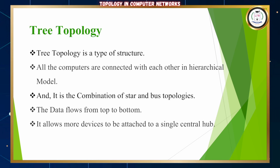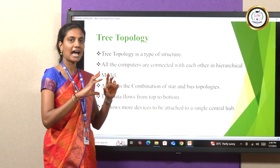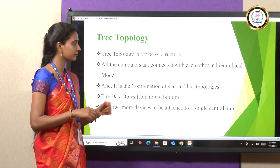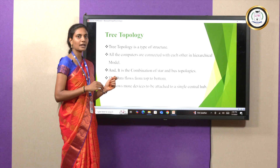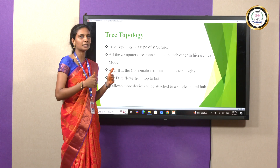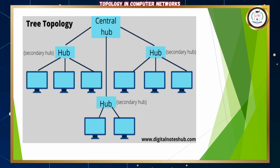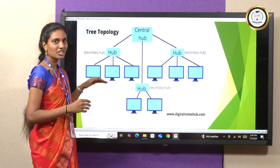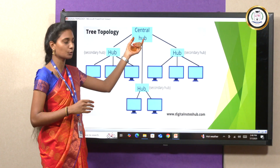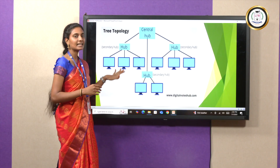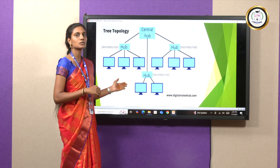The next one is tree topology. Tree topology is a type of structure where all the computers are connected with each other in a hierarchical model, and it is the combination of star and bus topology. The data flows from top to bottom only, not bottom to top. It allows more devices to attach to a single central hub. In the diagram, there is one central hub at the top, which connects to three hubs below, and each hub creates further child nodes. The top node is the parent node and the nodes below are child nodes — this hierarchical model is called tree topology.